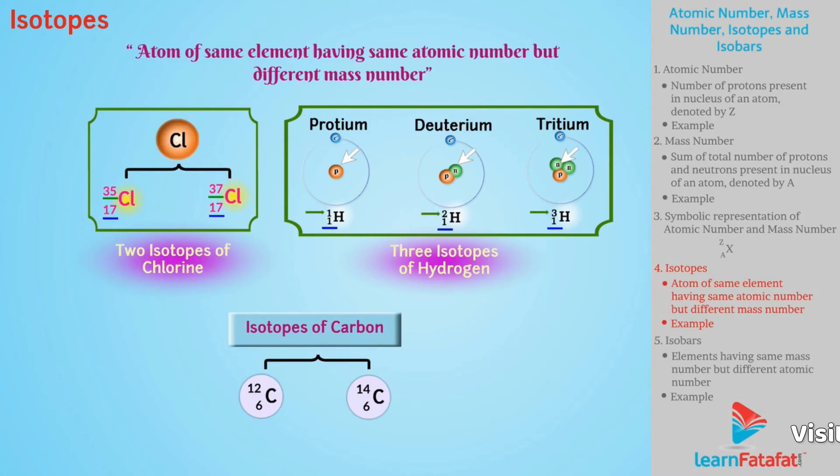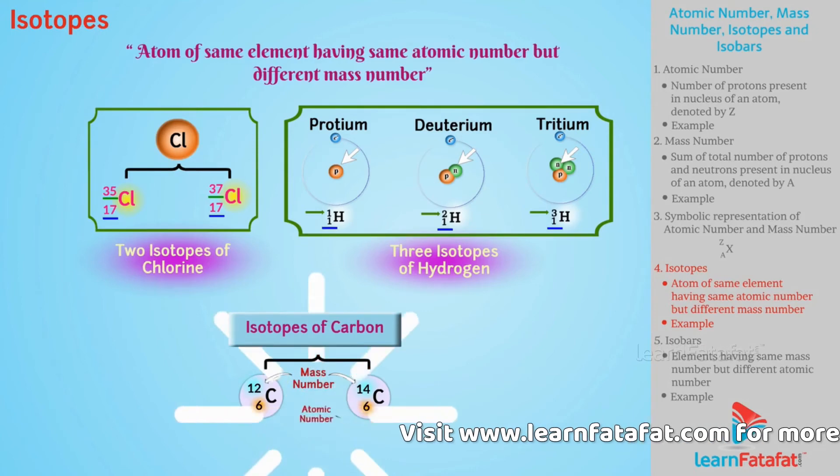It can be easily seen that mass number of isotopes are different, whereas they have same atomic number.